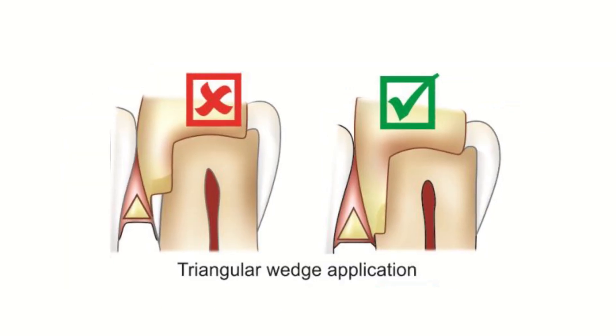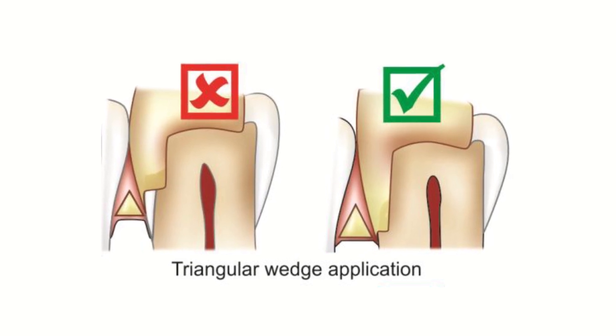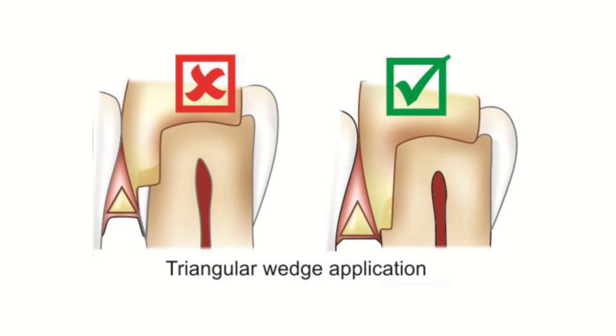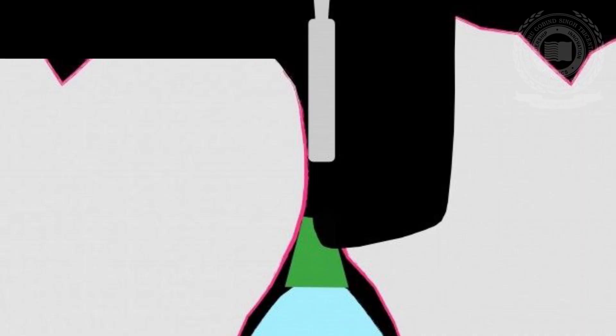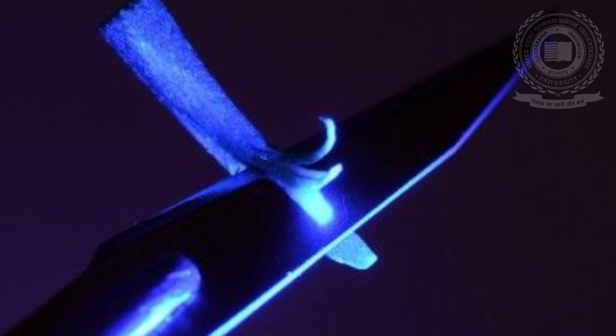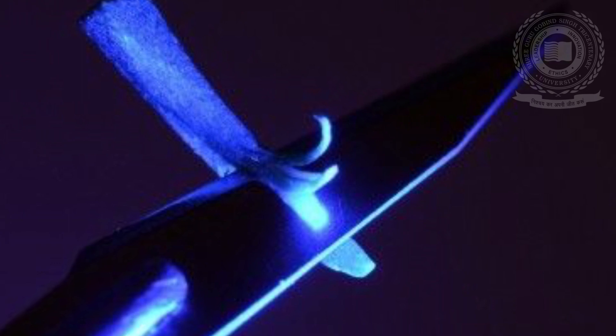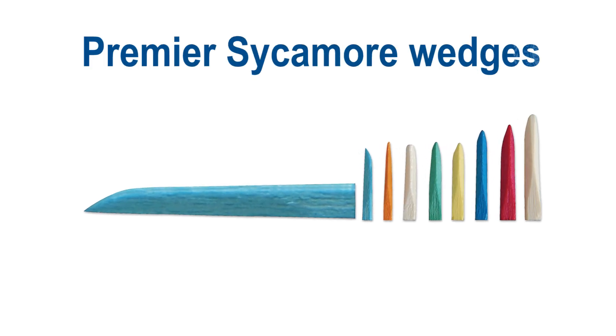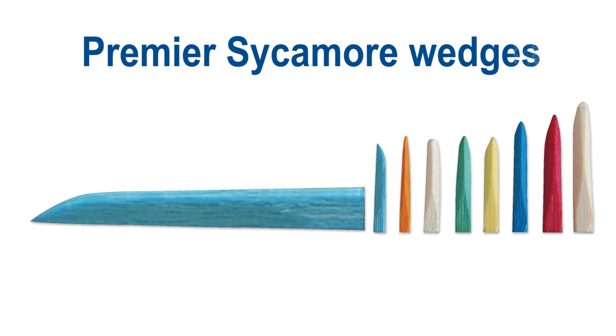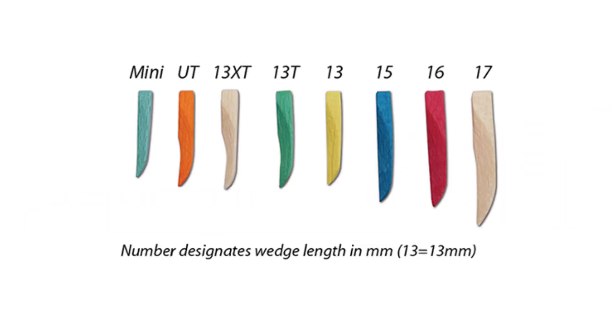The triangular wedge is indicated when deep gingival extension of the proximal box is anticipated, because the greatest cross-sectional dimension of the wedge is at its base. While the gingival wall is being cut, the bur's end corner may at times slightly shave the wedge but will help in preventing unexpected trauma. Triangular wedges can also be modified using a sharp-bladed instrument to prevent distortion of matrix contour. Premier Sycamore wedges are shaped to impart a more physiologic contour to the matrix and come in a larger selection of sizes.